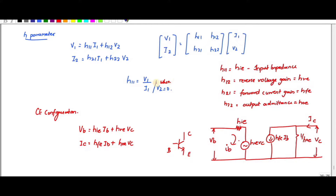So what is H11? H11 is nothing but V by I, that is input impedance. V1 represents the input and V2 represents the output. So this is the input impedance.